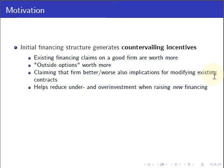Let me now be more specific on what countervailing incentives are and how they're generated by an initial capital structure. If you think about a firm that approaches a new round of financing, in most cases it will already have an existing business and existing investors with outstanding claims on the firm's cash flows. If the firm wants to claim it is really good so that the new round of financing will boost its prospects, we have to take into account that if the firm doesn't receive new financing it's probably not going to perform well, but it's also probably not going to die. So what we really need to take into account are the outside options of the firm.